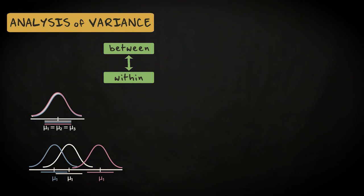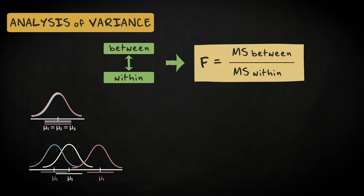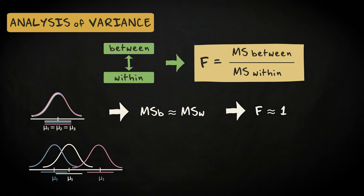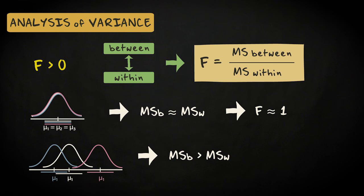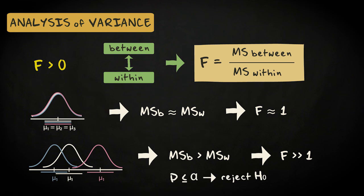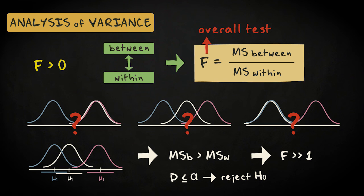Finally, we compare the two estimates of the population variance by considering their ratio, which is associated with the F-probability distribution. We divide the between-group variance by the within-group variance. If the population means are the same, we expect both methods to result in roughly the same estimate, so under the null hypothesis we expect a ratio close to 1. It will never be smaller than 0, since variances are always positive. If the population means differ, we expect the between-group variance to overestimate the population variance and to be larger than the within-group variance, so we expect a ratio larger than 1. If the ratio is so large that the associated p-value is smaller than the significance level, we reject the null hypothesis that the population means are equal and accept the alternative hypothesis that at least one of the groups differs from the rest. We don't know which group or groups differ and in what direction. The ratio of the between- and within-group variances provides an overall test, equivalent to the overall test in multiple regression.